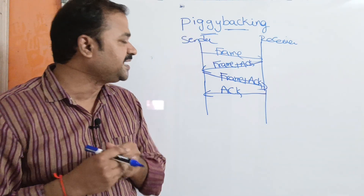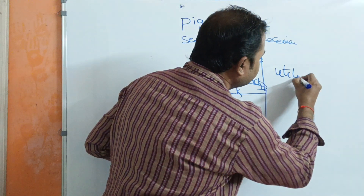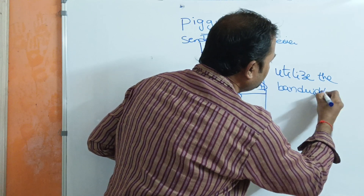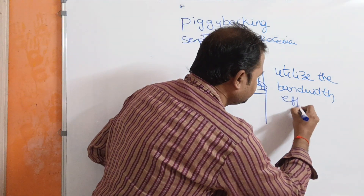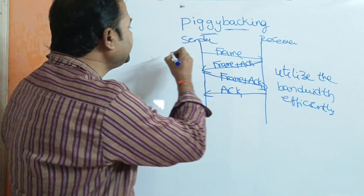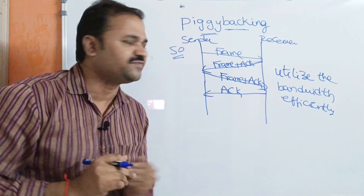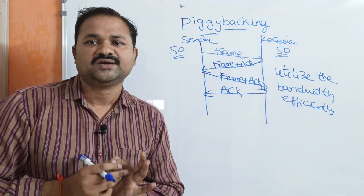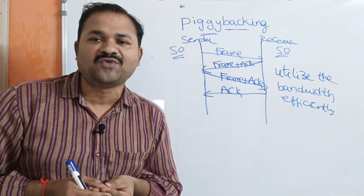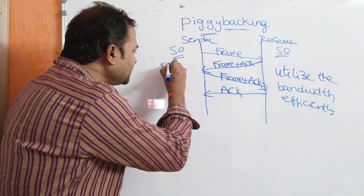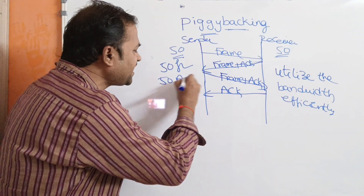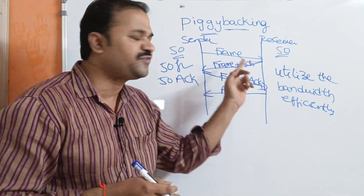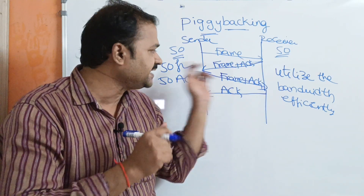We use piggybacking in order to utilize the bandwidth efficiently. Let us assume the sender has 50 frames to send to the receiver, and likewise the receiver also has 50 frames to send to the sender. If we don't use piggybacking, the sender has to send 50 frames separately as well as 50 acknowledgements separately.